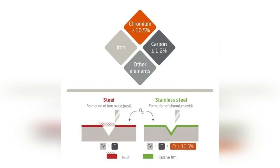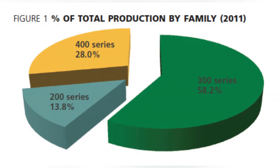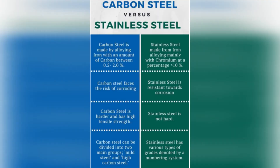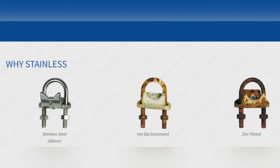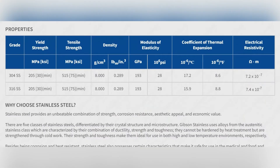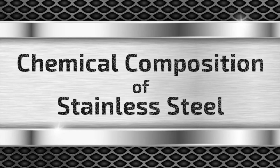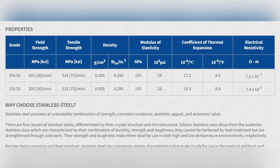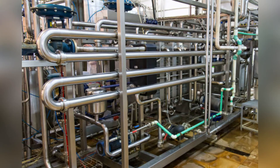Reduced levels of carbon, such as those found in 304L and 316L, will help prevent intergranular corrosion. Lastly, nitrogen, although not a major element of stainless steel composition, increases pitting resistance. Choosing stainless steel can help greatly reduce the risk of corrosion and yield long-term savings by avoiding the cost associated with reinstallation of inferior products.